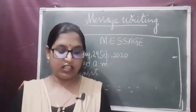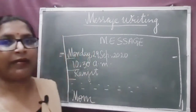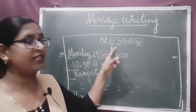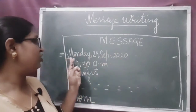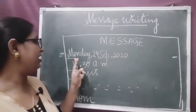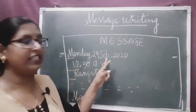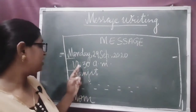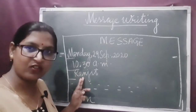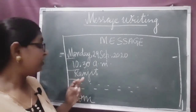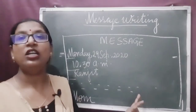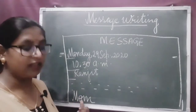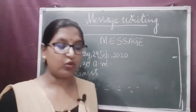Reading this sample message will be very helpful for you to understand the format and structure. Remember: it should be written inside a box; on the top write 'MESSAGE' centered in capital letters; leave one line, then write the day and date on the left; leave one line and write the time; leave one line and address the person; leave one line and write the body of the message; leave one line and finally write the name of the person who writes the message.